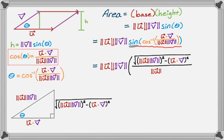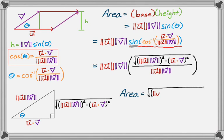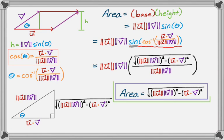All that magnitude stuff is just going to cancel because it's in the numerator and denominator. So we've worked out a formula: the area of the parallelogram is the square root of the product of the magnitudes squared minus the dot product squared. Depending on what you're doing, that might be enough, and you could stop there.